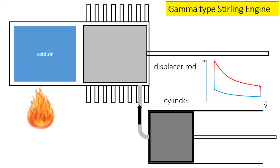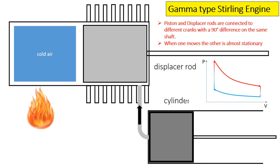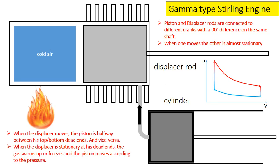Another important question is how the rods of the displacer, piston, and cylinder are actuated. The piston and displacer rods are connected to different cranks with a 90-degree difference on the same shaft. This means that when one of the two moves, the other is almost stationary. When the displacer moves, the piston is halfway between its top and bottom dead ends, and vice versa. This is why the Stirling engine works: when the displacer is stationary at its dead ends, the gas warms up or cools down and the piston moves back and forth according to the pressure.